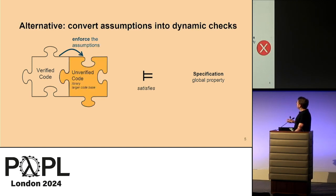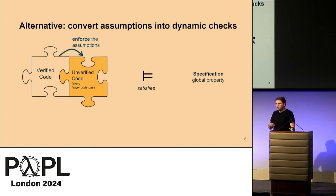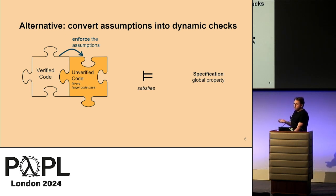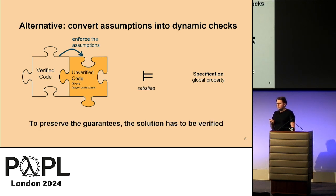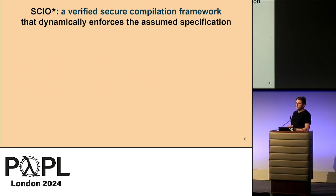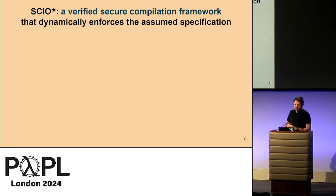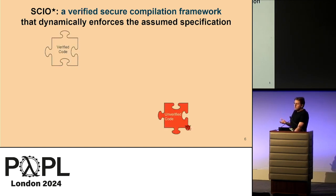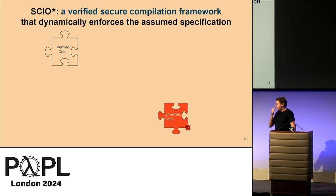The alternative is to convert the assumptions into dynamic checks and to enforce the assumptions on the unverified code. To get our strong guarantees, we want a verified solution. In this paper, we look at this problem through the lens of secure compilation. Our solution is called SCIO-star — a verified secure compilation framework that dynamically enforces the assumption specification, allowing us to link verified code against unverified code securely, even if the code is adversarial.